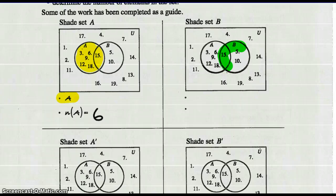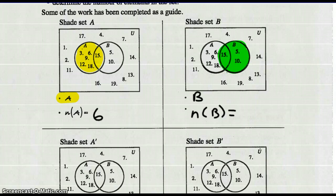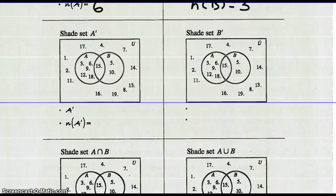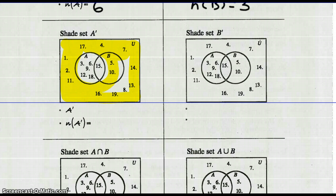Shade set B — well, here's set B, we shade that. Define it — that's set B. And the number of elements in set B are three; there are three numbers inside that circle. So shade the set that is not A — the elements that are not A, A prime. All the parts that are not A are everything around circle A. That's the symbol for not A, and the number of elements not in A: nineteen less six is thirteen.